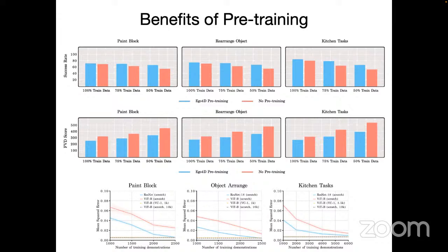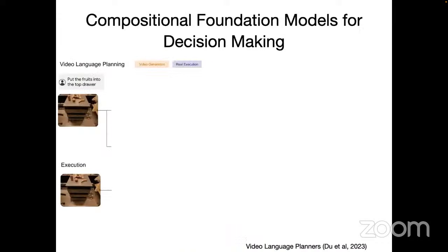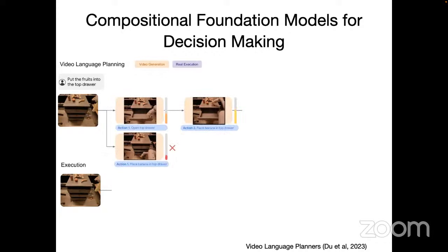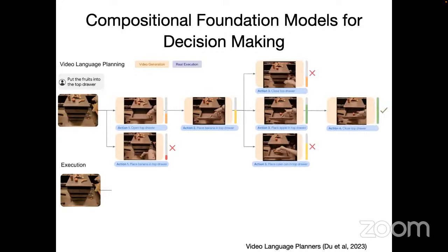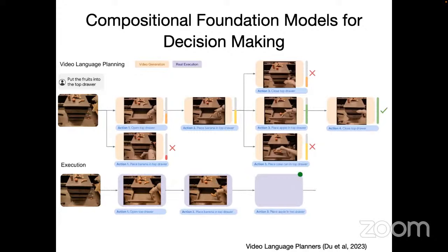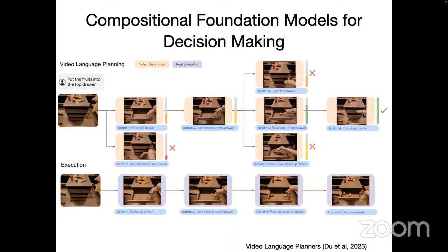So far all tasks shown are in simulation. Can this be done in the real world? A recent arXiv paper shows that if you scale up each component — replacing the visually grounded LLM with PaLM-E, using video diffusion for imagining different futures — you can do tree search combining PaLM-E and video diffusion, then execute real-world robot plans. The ideas from HiP can be scaled up to work on real-world robots.